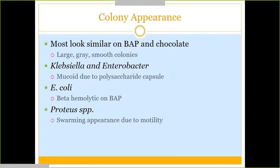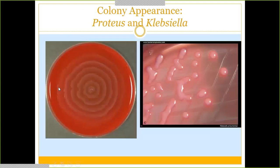The mucoid appearance of Klebsiella and Enterobacter is very unique — once you get used to seeing it, you instinctively recognize it right away. E. coli most of the time produces beta-hemolysis — they're large gray beta-hemolytic colonies, though there are exceptions. Proteus is notable for its swarming appearance on agar — it is a very motile bacterium and creates a swarming pattern that looks like waves on a beach.